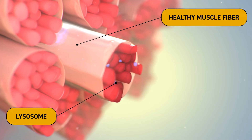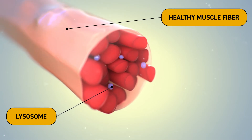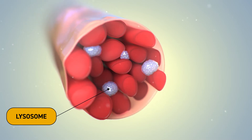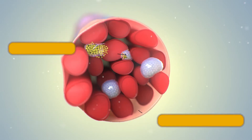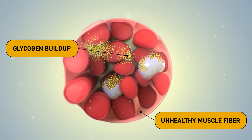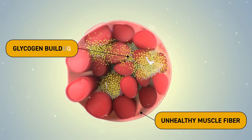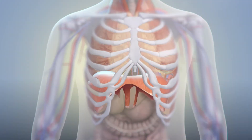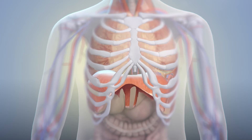Muscle weakness in the proximal muscles that enable movement and the respiratory muscles that enable breathing is caused by lysosomal accumulation of glycogen in muscle cells. This occurs because of pathogenic variants — the enzyme GAA, which normally breaks down glycogen, is missing or deficient. This buildup of glycogen in the lysosomes of muscle cells causes the cells to swell and rupture, resulting in permanent damage.